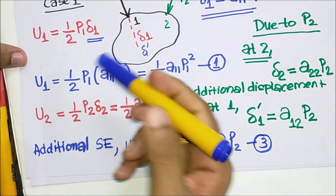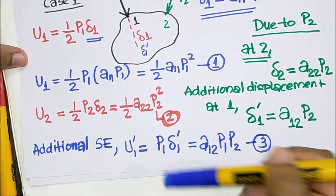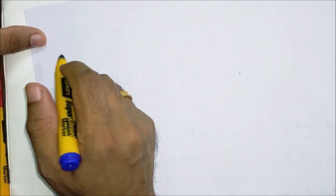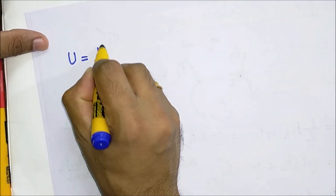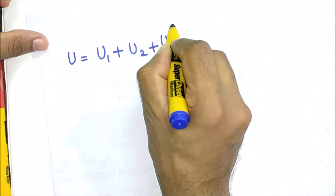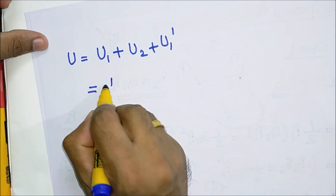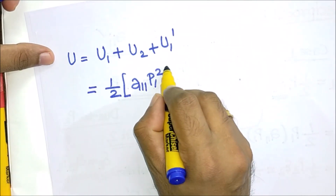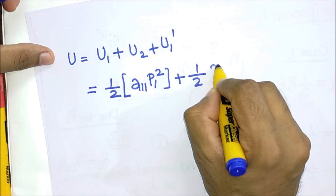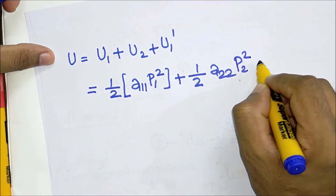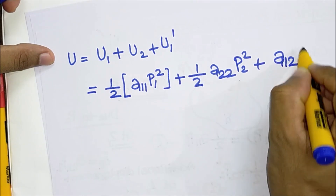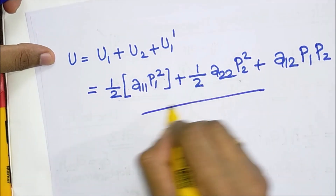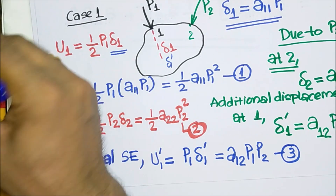The total strain energy can be written as U1 plus U2 plus U1 dash. So the total strain energy U equals U1 plus U2 plus U1 dash, which gives us terms involving half A11 P1 squared, half A22 P2 squared, and A12 P1 P2.